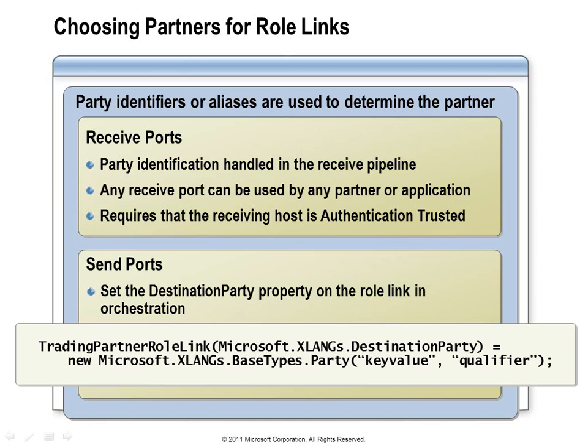In this discussion of role links, I've been focusing mostly on the send side. On the receive side, you can make use of the party resolution pipeline component to identify the party that sent a message into BizTalk — for example, by the Windows username provided to authenticate with IIS. If the party resolution component determines who sent the message, you'll be able to see the name of that party in a message context property named source party. This will only work if the receive adapter is running in a host marked as authentication trusted, so you would need to check the trusted checkbox on the corresponding isolated host.